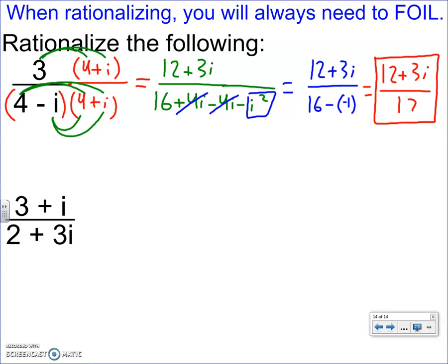By the way, the calculator cannot do this for you, so if you type in the calculator, it will give you error. It doesn't know what to do. It cannot conjugate. Same for down here. We have to conjugate this. I can't have I on the bottom. I multiply the complex conjugate.